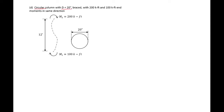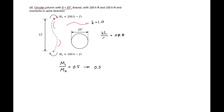This column is also a circular column with d equal to 20 inches — the same as the previous column — with the same pin-pinned end conditions, so k equals 1.0. Therefore our kL/r is again 28.8. However, the end moments have now changed direction, so now we have double curvature. For double curvature, our M1/M2 is positive 0.5.